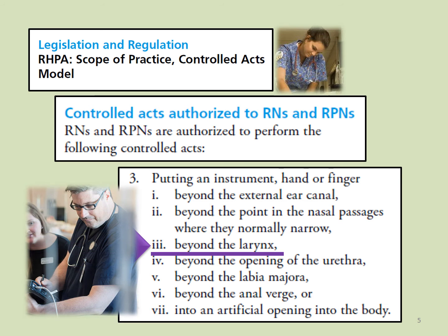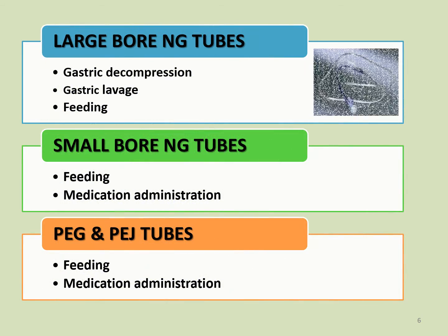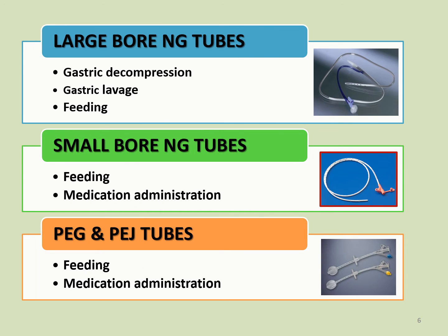Whether the RPN may insert a nasogastric tube will vary according to the scope of practice of the agency. A nasoenteric tube can only be inserted by specially trained medical staff. A percutaneous tube will be surgically inserted by a physician. The goal of therapy influences the choice of enteral access device.